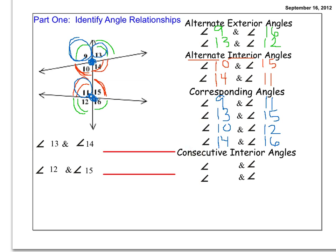So if I'm looking at angle 10, what angle is on the same side of the transversal? It would be 11. So 10 and 11 are consecutive interior as well as 14 and 15.